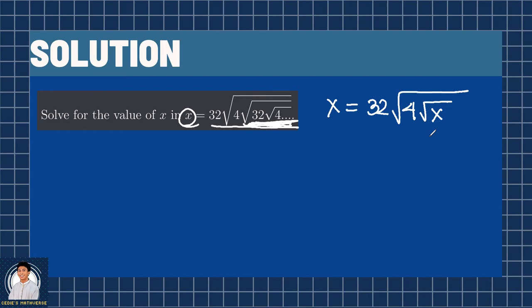Now, taking the square of both sides gives us x squared equals 32 squared times square root of 4 square root of x squared, which is equal to 32 squared is 1024 times 4 square root of x.